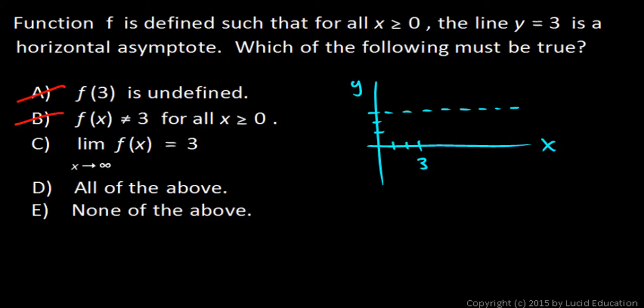Choice C, the limit as x approaches infinity of f of x is equal to 3. That is true. If y equals 3 is a horizontal asymptote, then this graph must eventually approach that graph without crossing it,